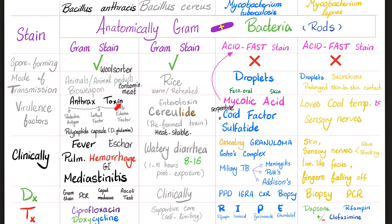Virulence factors: anthrax toxin consists of protective antigen, lethal factor, and edema factor. Bacillus cereus produces cereulide toxin and enterotoxin — preformed and heat-stable, so reheating rice doesn't destroy it. Antibiotics kill bacteria but generally cannot kill preformed toxins. Mycobacterium tuberculosis virulence includes cord factor and sulfatide; it is acid-fast because of mycolic acid. Mycobacterium leprae loves cold temperatures and sensory nerves.